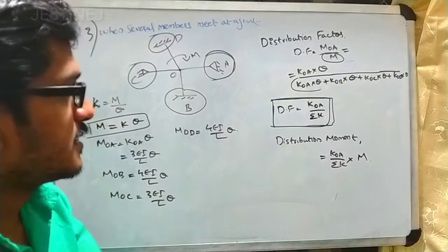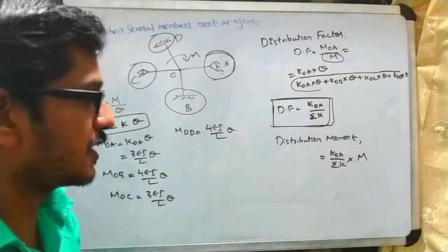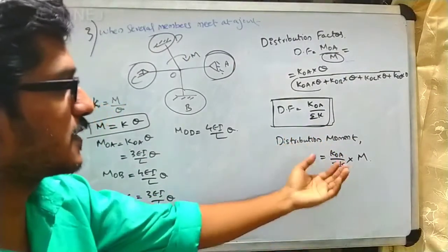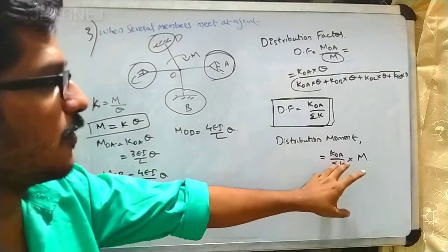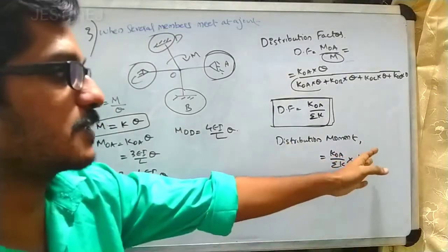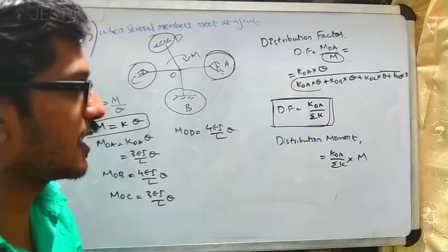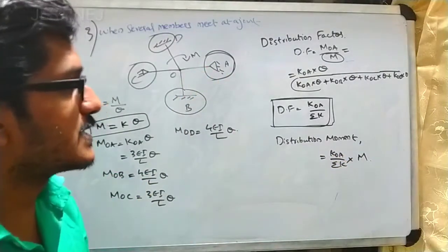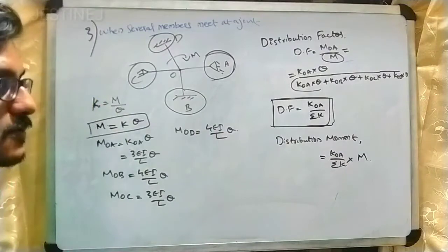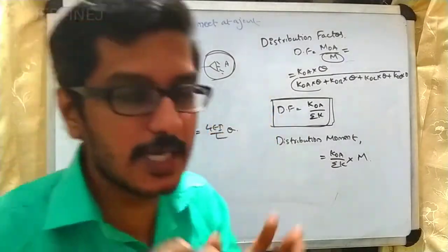The distribution moment can then be calculated as (K_OA / ΣK) multiplied by the moment applied at the joint. This is the general procedure for the moment distribution method.